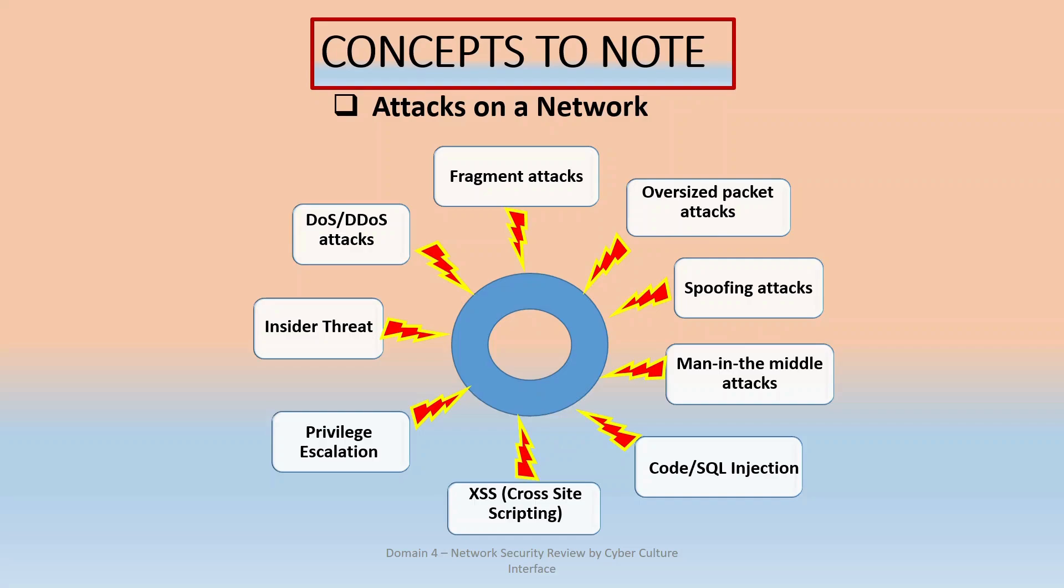A good example is insider threat. Insider threat is when somebody within your organization is posing a threat to your network. Maybe the person is trying to compromise the network from inside. The person has access, so it is an insider threat. Man-in-the-middle attack is when someone is intercepting signals and pretending to be two different people on two ends of the network. All these attacks are concepts you need to understand for ISC2 Certified in Cybersecurity.